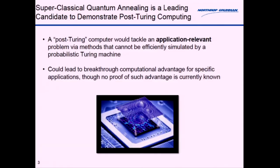I'd like to begin by just kind of touching on the exciting moment that we find ourselves in as a community, where we are beginning to enter this post-Turing computing regime where our computers may tackle application relevant problems but via physical methods that are not efficiently simulated by a probabilistic Turing machine. That's quite a paradigm change from existing computing technologies up until now. These new physical mechanisms could lead to a complete computational breakthrough for specific applications, but for quantum annealing no proof of such advantages is currently known.